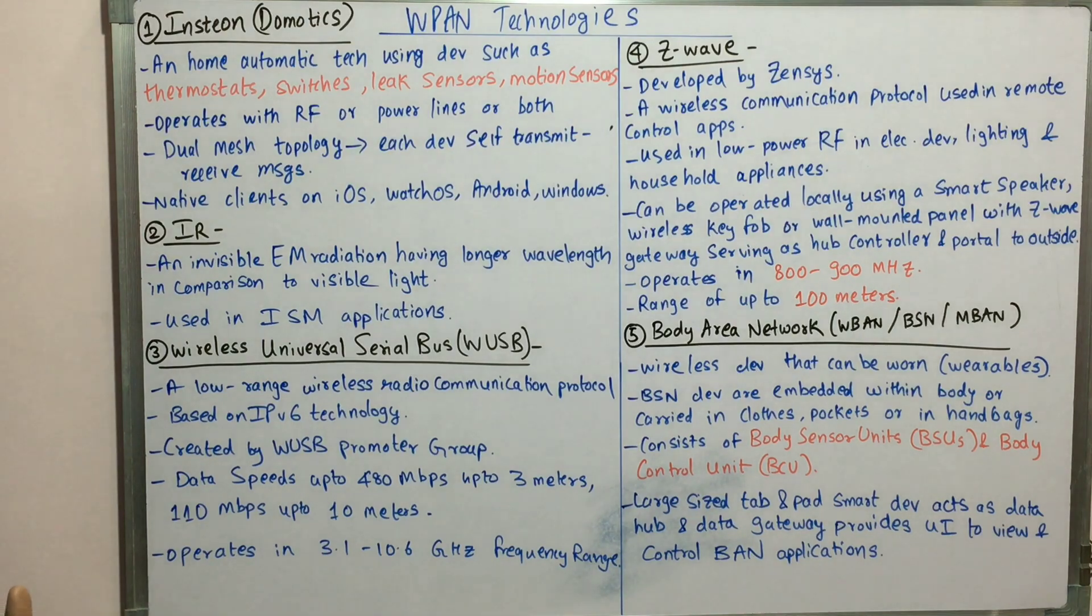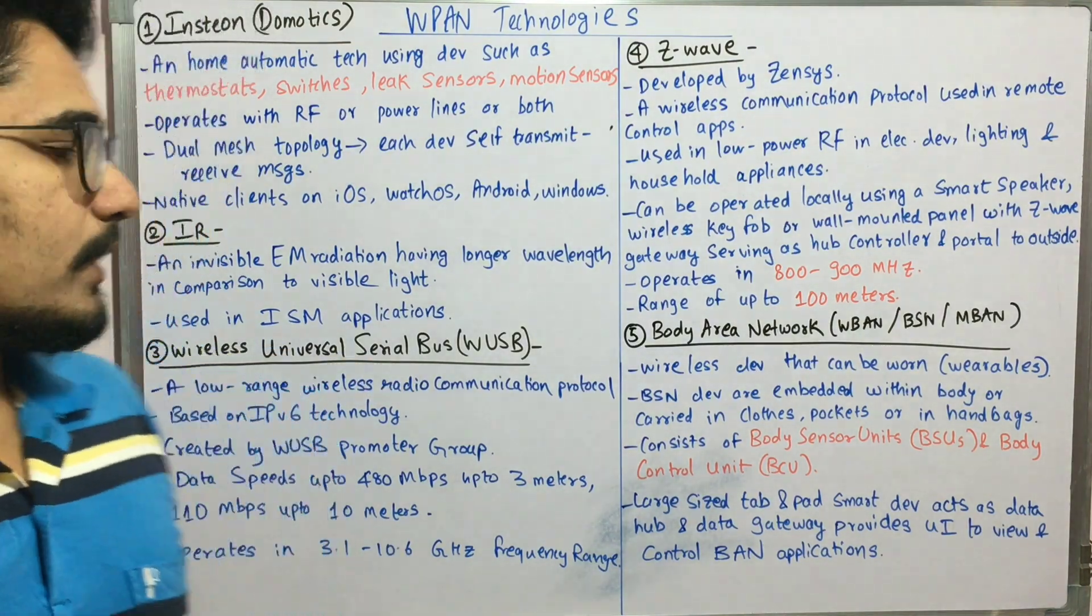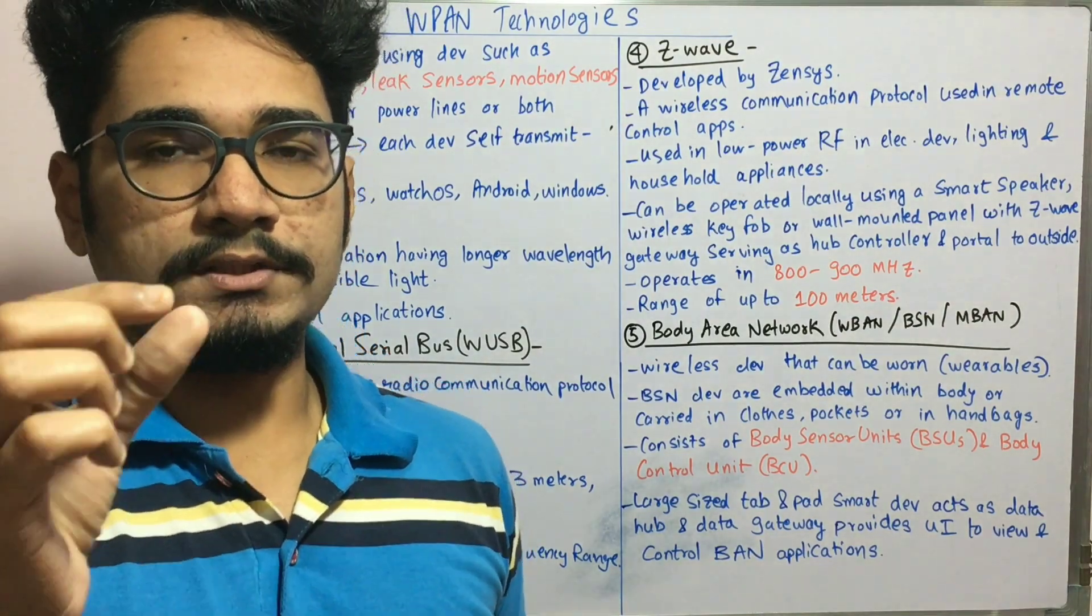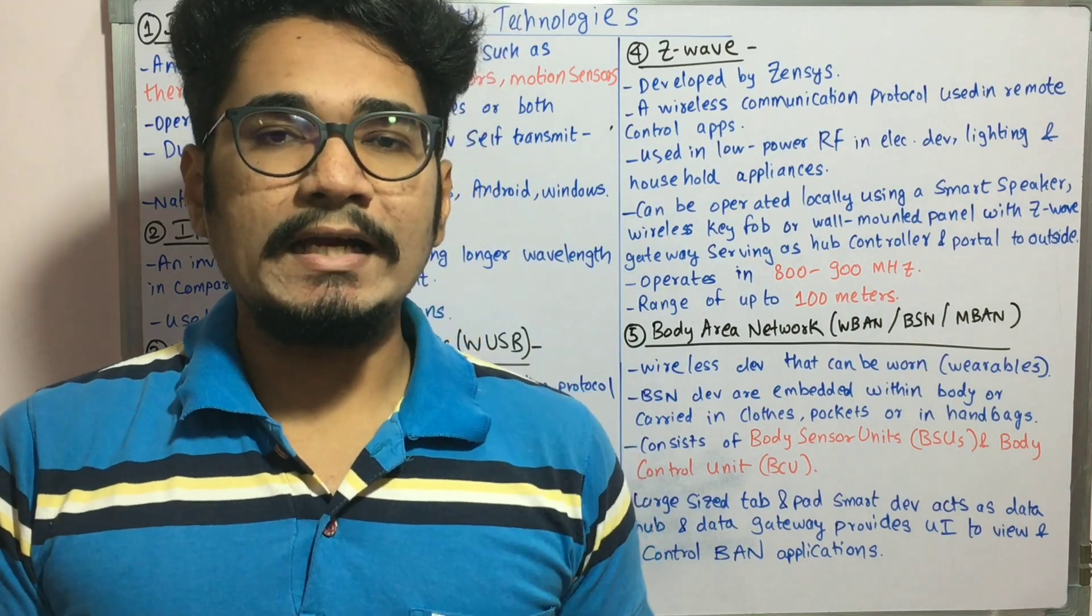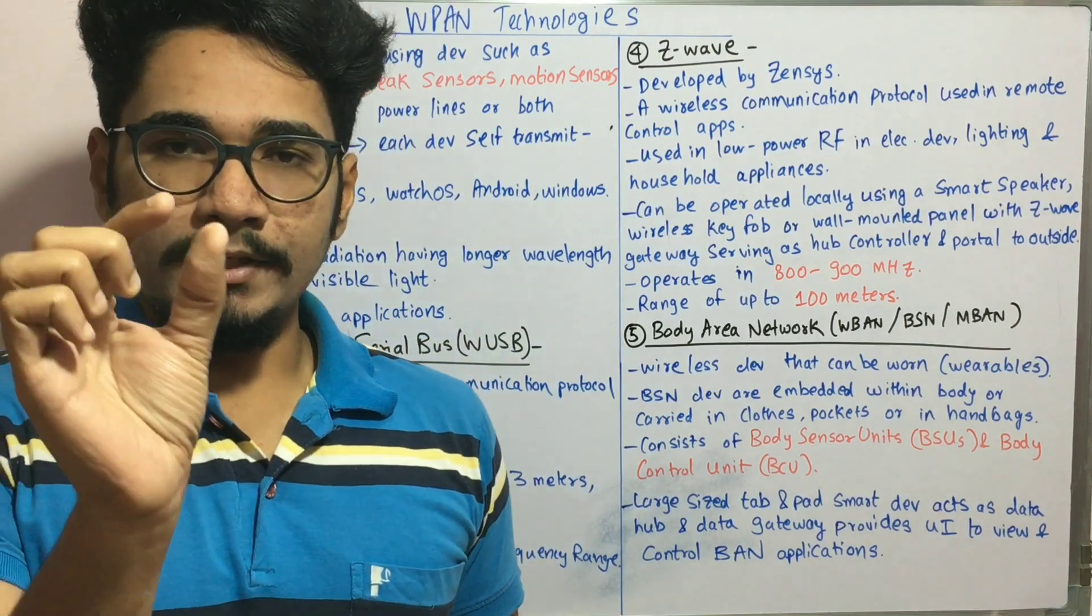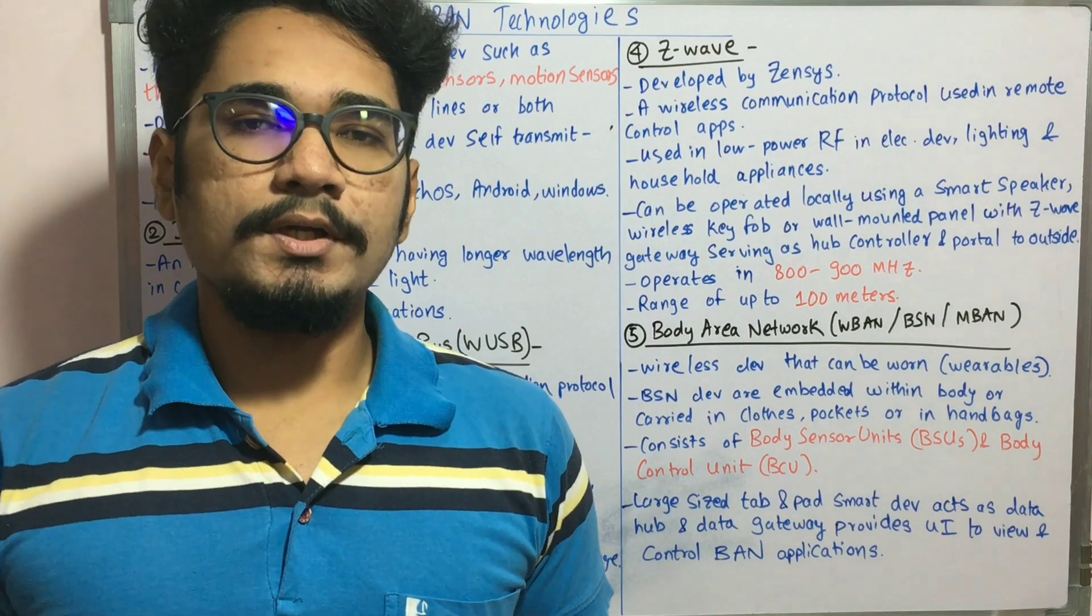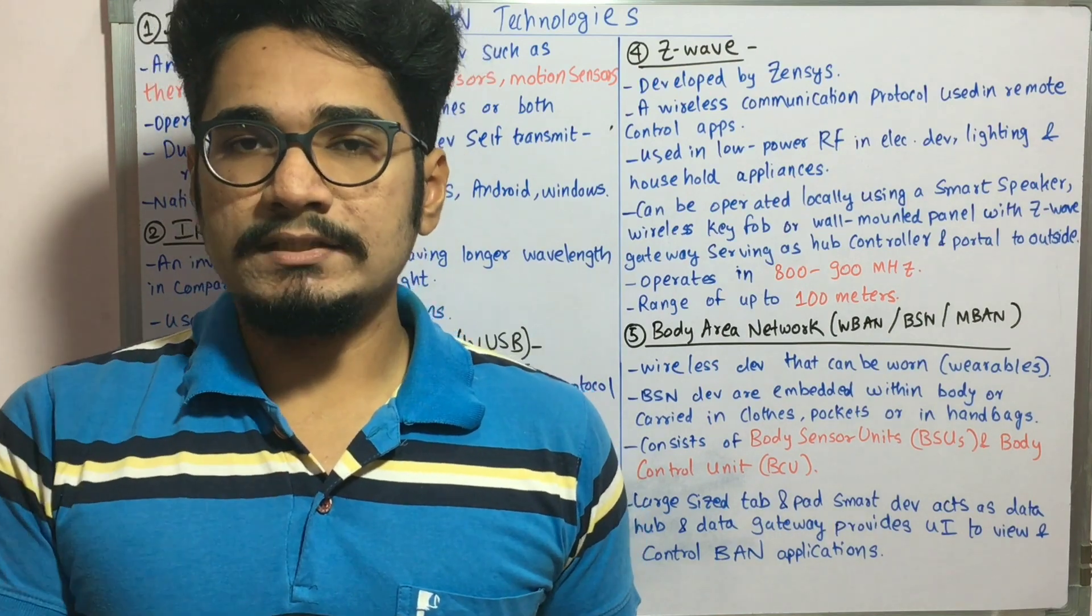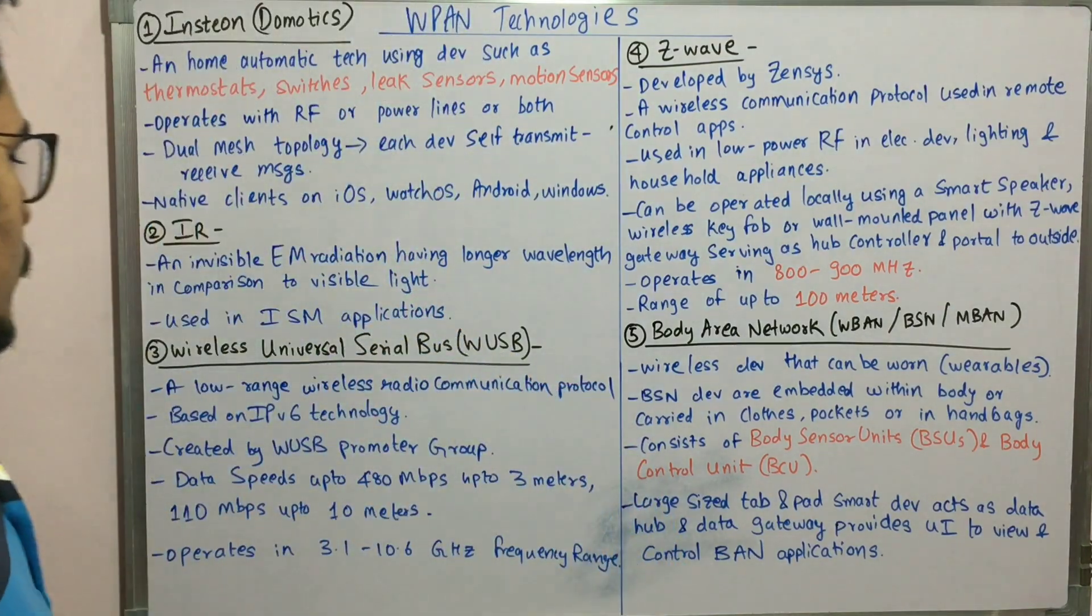Next, we talk about wireless universal serial bus, called WUSB. This can be thought of like a device you just plug into your laptop port to access your wireless keyboard or wireless mouse. It's a low-range wireless communication protocol.